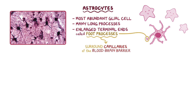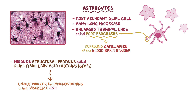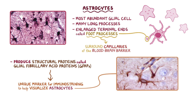The foot processes help induce and maintain the formation of tight junctions between endothelial cells. Astrocytes also produce structural proteins called gliofibrillary acidic proteins, or GFAPs. These proteins can be used as a unique marker for immunostaining to help visualize astrocytes in tissue samples. In this high-power image, the GFAP-specific staining makes it easier to see the astrocytes in brown, as well as the foot processes that surround capillaries near the top of this image.